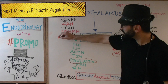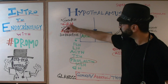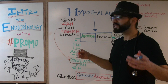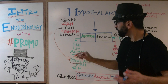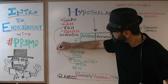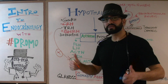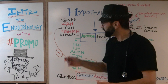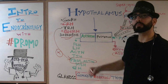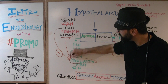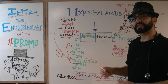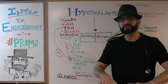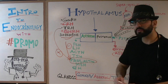Prolactin is controlled by two hormones from the hypothalamus. First, thyroid releasing hormone stimulates prolactin levels, increasing its release. Second, dopamine has a negative effect on prolactin — when dopamine levels are high, prolactin levels are suppressed.